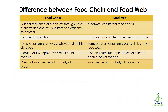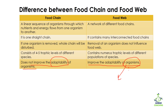The food chain does not improve the adaptability of the organism. Adaptability means that you can survive in a particular environment or with a particular food provided to you. But in the case of a food web, it improves the adaptability of the organism because the organism has different options — it can eat one, eat two, or eat three — so adaptability is increased.